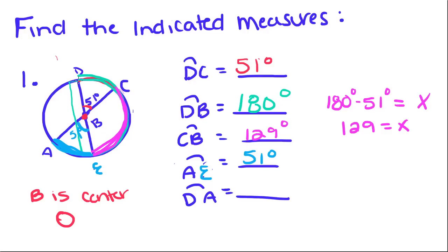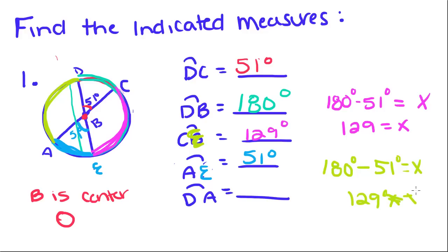Now they want us to find the measure of arc DA. We're going to do the same thing we did to find arc CB. Arc DA is part of the big arc DE, which is equal to 180 degrees. So we take 180 degrees minus this piece, which is 51 degrees, and we get 129 degrees. Which makes sense because these two arcs are also related to vertical angles, so they have to have the same measure.